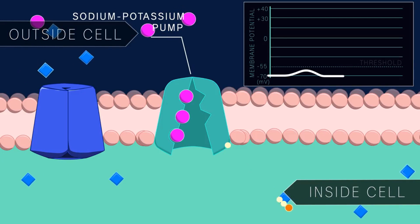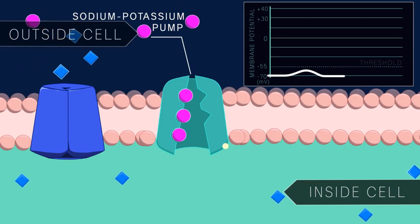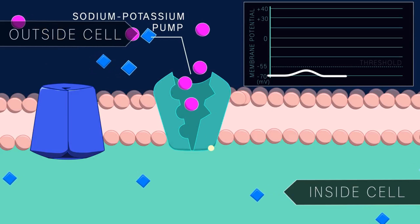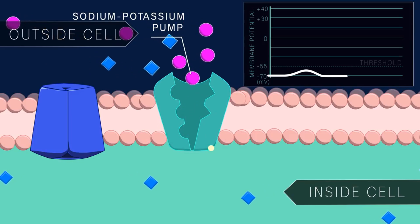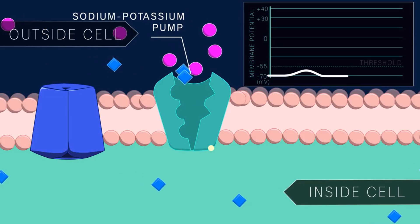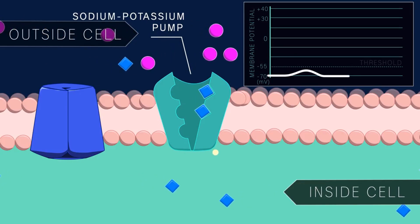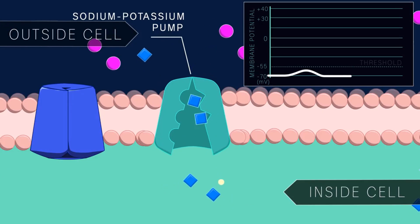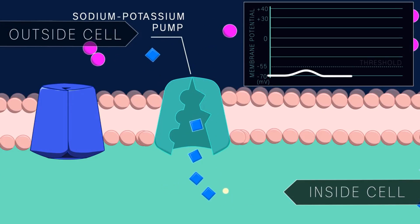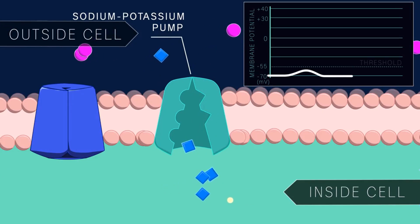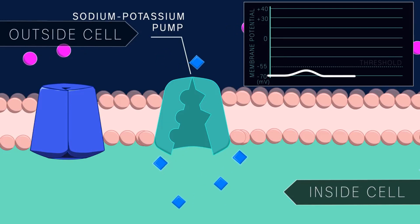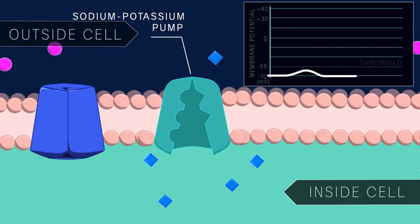Maintaining ionic balance in neurons is so important that this process can account for 20–40% of the brain's total energy use. Only when the resting membrane potential and ion distributions are maintained at precise levels will the neuron be poised and ready to fire an action potential.